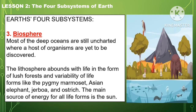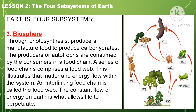Most of the deep oceans are still uncharted, where a host of organisms are yet to be discovered. The lithosphere abounds with life in the forms of lush forests and a variety of life forms like the pygmy marmoset, Asian elephant, jerboa, and ostrich. The main source of energy for all life forms is the sun. Through photosynthesis, producers manufacture food to produce carbohydrates. The producers or autotrophs are consumed by consumers in a food chain. A series of food chains comprises a food web, illustrating that matter and energy flow within the system. This constant flow of energy on Earth is what allows life to perpetuate.